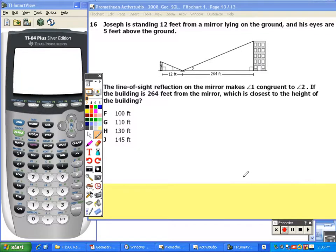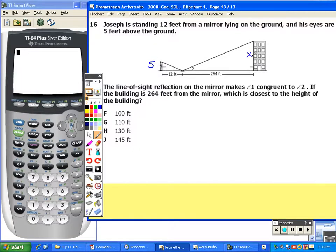Joseph's eyes are 5 feet above the ground, so I'm going to label that on my diagram, and the height of the building I don't know, so I'm going to make that x.